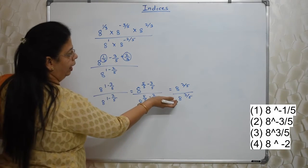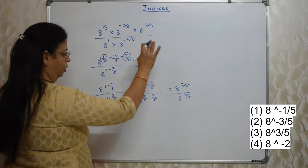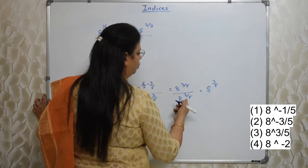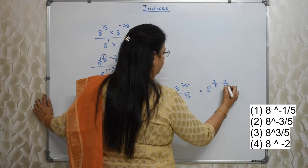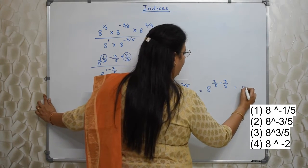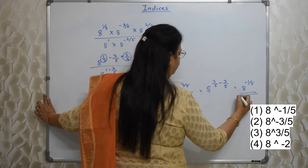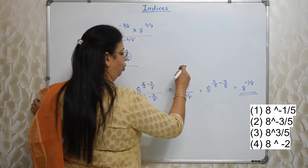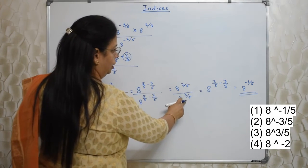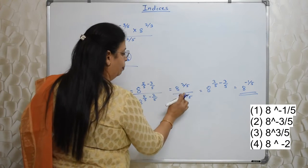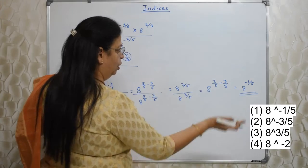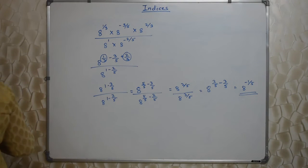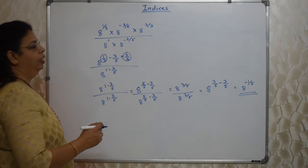Now I need to take this denominator number upper. So again rule of indices. 8^(2/5), then this will be minus (-3/5). So answer will be 8^(-1/5). Here since the base was same, I have just taken the index on top with minus. Because this was plus. If this would have been minus, that would have become plus. But this was plus so it has become minus because we have shifted from denominator to numerator as per the rule of indices.